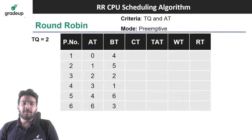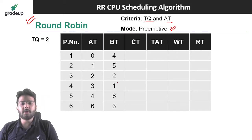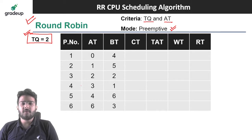Let's start the Round-Robin CPU scheduling algorithm. In this algorithm the criteria are time quantum and arrival time. The mode is preemptive, meaning you can preempt a process in between. Here we are assuming the time quantum is equal to 2. Let's understand how we are going to schedule these processes using the Round-Robin CPU scheduling algorithm.